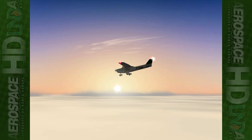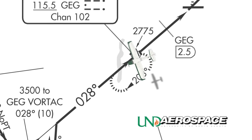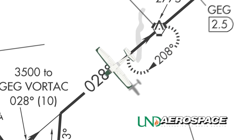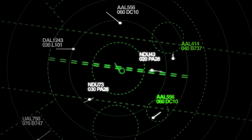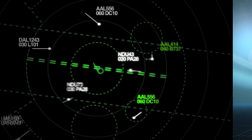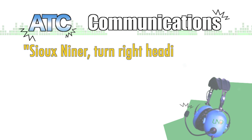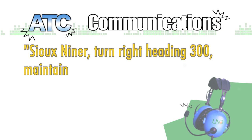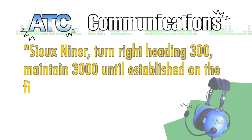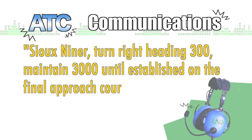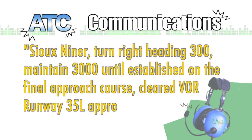Whether receiving radar vectors or flying a full procedure instrument approach, the pilot will eventually receive an approach clearance from ATC. Here is an example of what a pilot will hear when being given radar vectors to an instrument approach: 'Two-Niner, turn right heading 3-0-0, maintain 3,000 until established on the final approach course. Cleared VOR runway 3-5 left approach.'